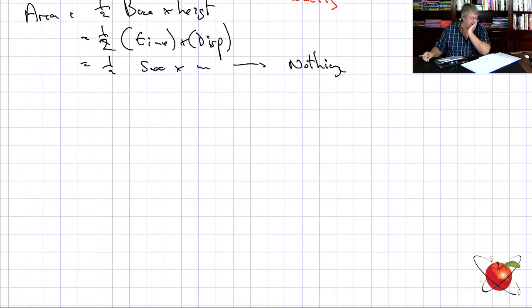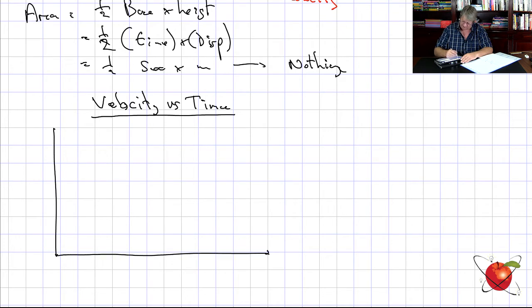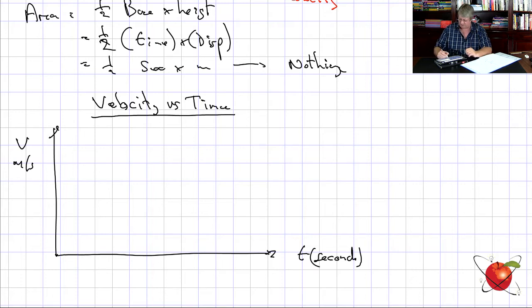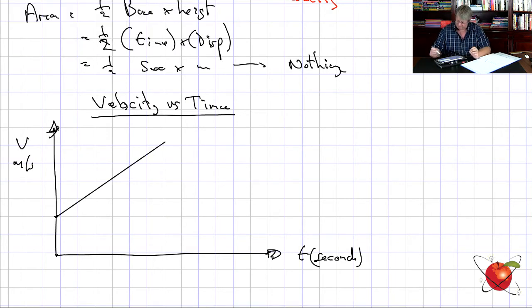The next graph is a velocity-time graph. Here's my graph: velocity in meters per second on the vertical axis and time in seconds on the horizontal axis. I'll draw the line starting from some initial value.